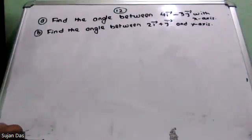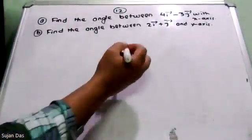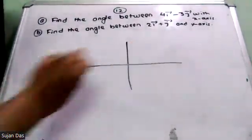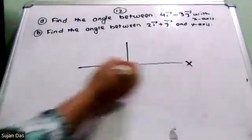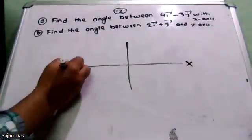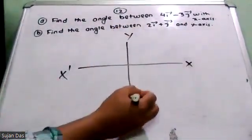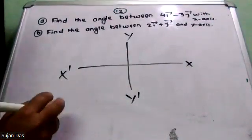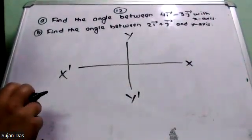So, x-axis — we need to know about the x-axis. So, the x-axis unit vector, you know — this is the unit vector for x-axis, and this is the y-axis. So, for the x-axis, they have a unit vector.